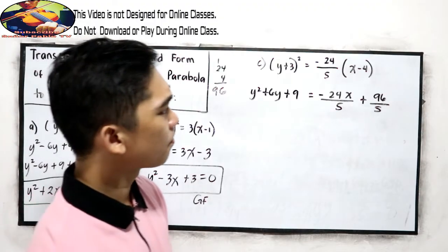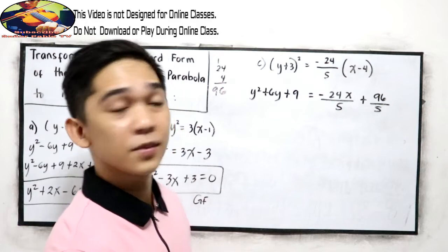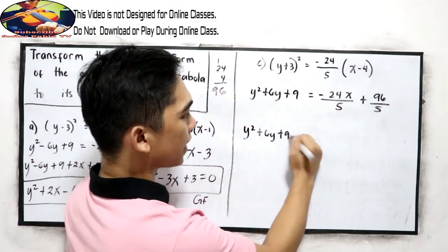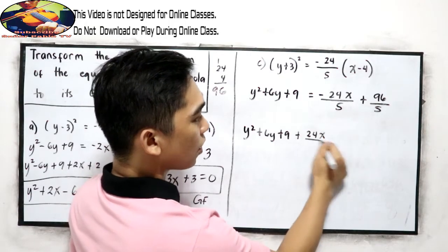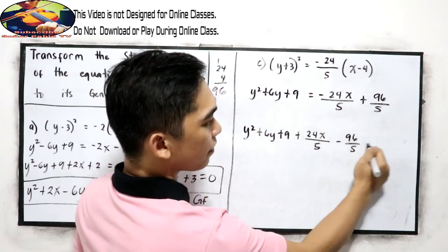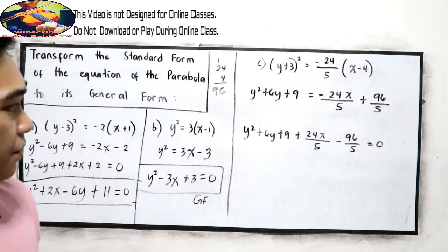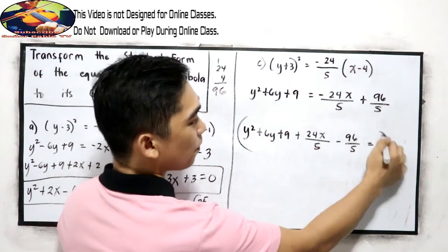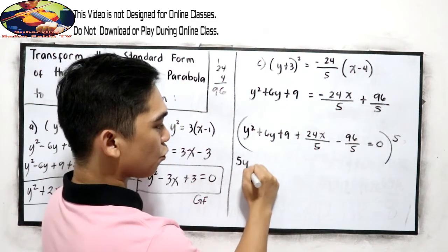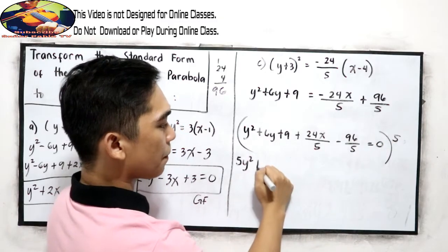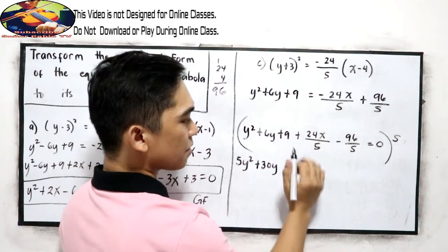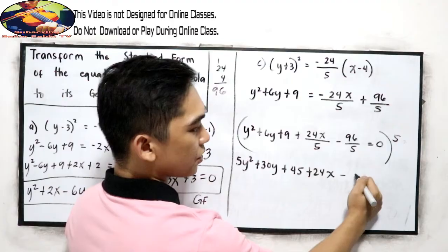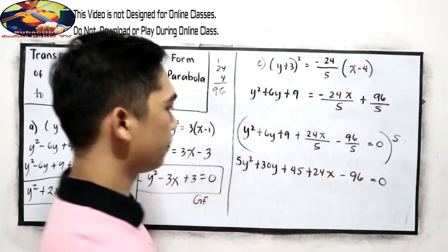Next, equate to 0. So we have y squared plus 6y plus 9 plus 24x over 5 minus 96 over 5 is equal to 0. We can remove the denominator 5 by multiplying the entire equation by 5. So: 5y squared, 5 times 6y is positive 30y, 5 times 9 is positive 45. The denominators cancel out, giving plus 24x minus 96 is equal to 0.